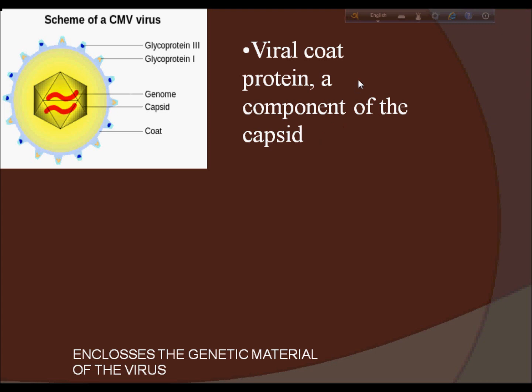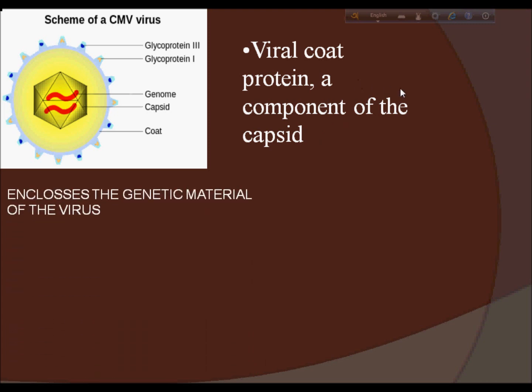Capsids are broadly classified according to their structure. The majority of viruses have capsids with either helical or icosahedral structure. Some viruses, such as bacteriophages, have developed more complicated structures due to constraints of elasticity and electrostatics. The icosahedral shape, which has 20 equilateral triangular faces, approximates a sphere, while the helical shape is cylindrical. The capsid faces may consist of one or more proteins — for example, the foot-and-mouth disease virus capsid has faces consisting of three proteins named viral protein 1 to 3, or VP1 to VP3.